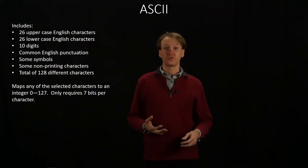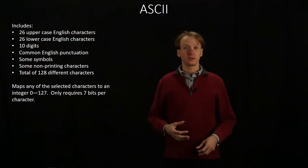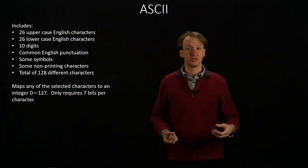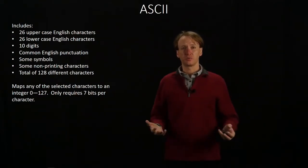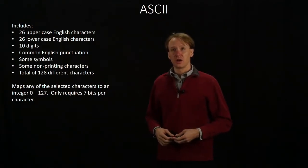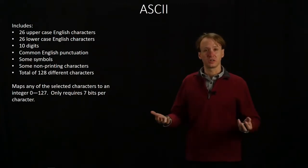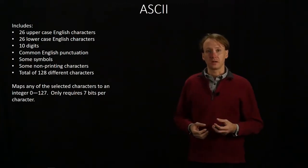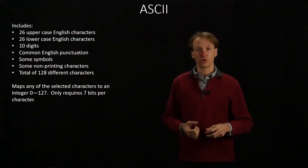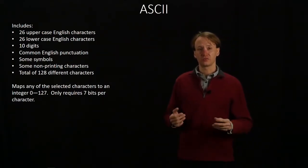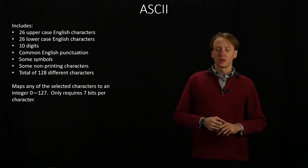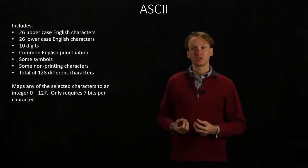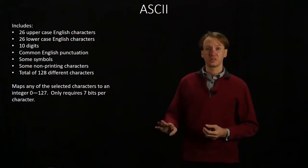ASCII was the first major format developed. ASCII includes several different things like uppercase English characters, lowercase English characters, digits, common punctuation that we use in English, a handful of symbols, and some non-printing characters. But there's only room for 128 characters. 128 different characters is more than enough for pretty much anything you'd want to write with English. The nice thing is that this means we can fit any individual character into just seven bits — we only need seven bits to represent a character.